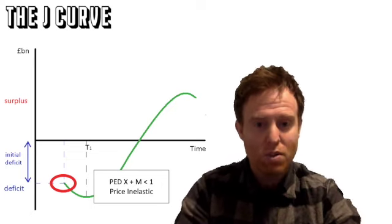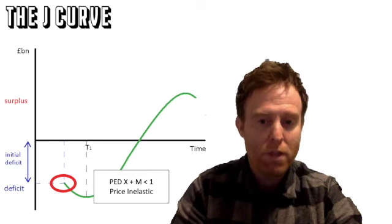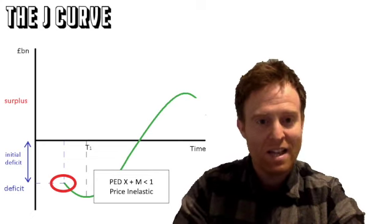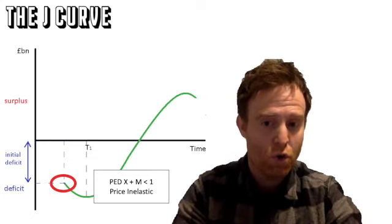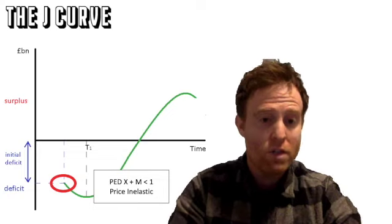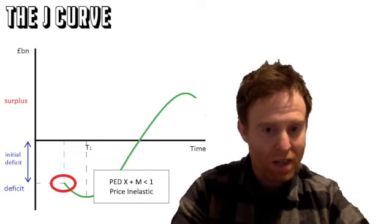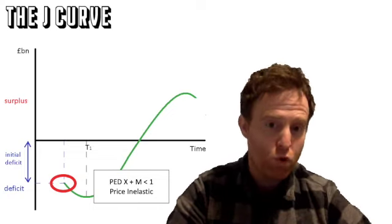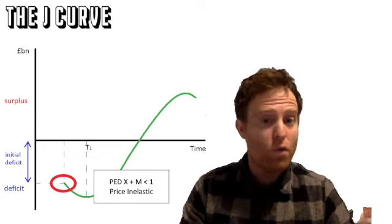They believe that for many reasons. In the short term, because it's inelastic, it will actually worsen the current account deficit. Then over time it will become more elastic and start to improve the current account deficit, hopefully getting it into a surplus.